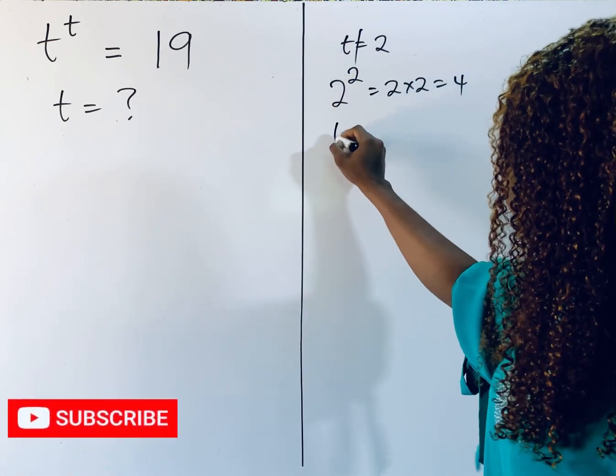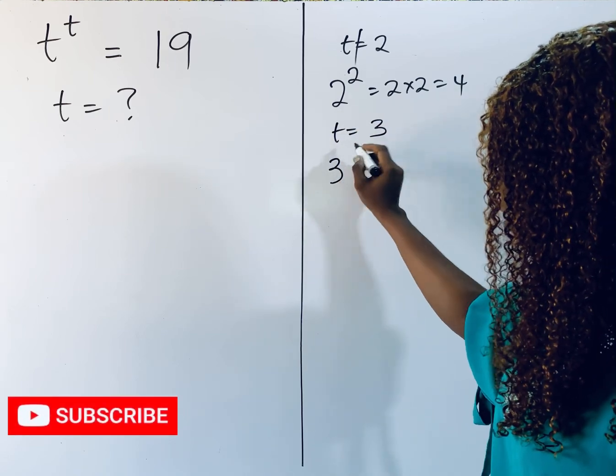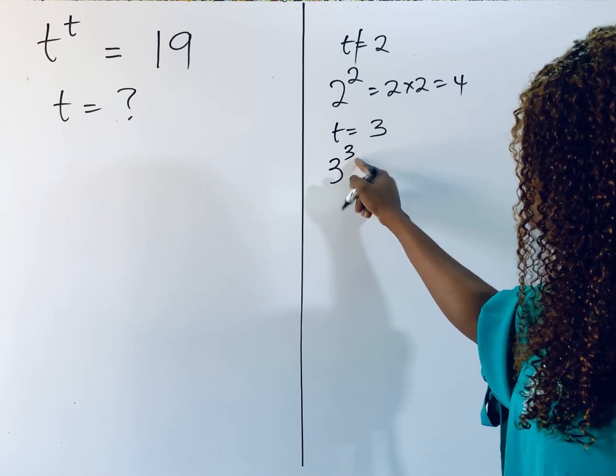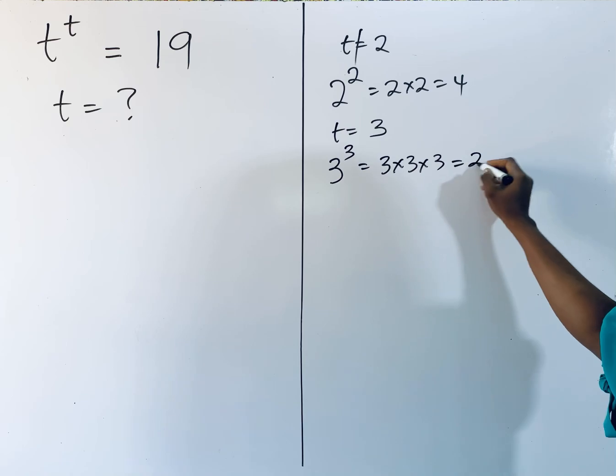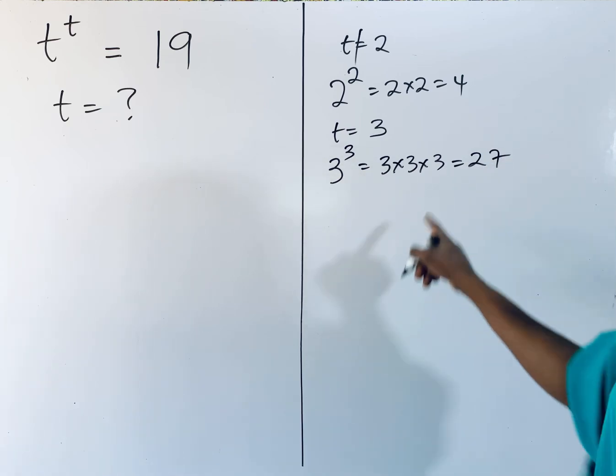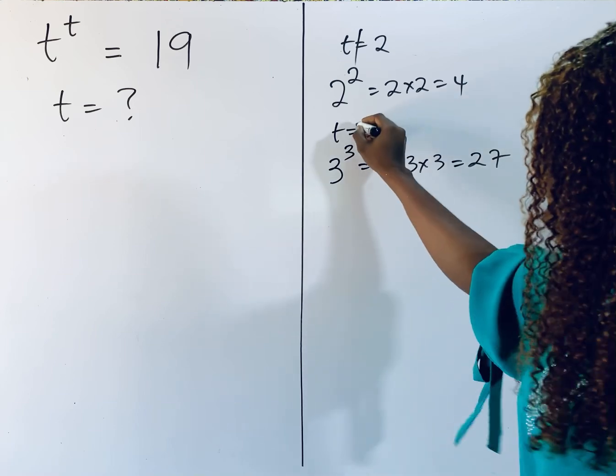Now let's look at when t is 3. You're going to have 3 to the same power. So we have 3 to the power of 3, which gives us 3 multiplied 3 times to give us 27. 27 is far away from 19, so t can't be 3.